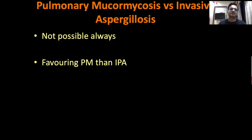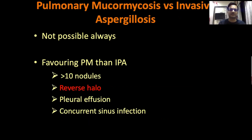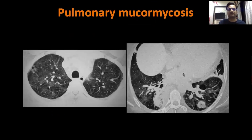Remember, mucormycosis is not the only invasive fungus — invasive aspergillosis also exists, and before COVID-19 it was actually more common. So how do you differentiate the two on CT? It is not always possible, but certain signs favor mucormycosis over aspergillosis: more than 10 nodules (aspergillosis usually presents with few but larger lesions), the reverse halo (shown to be more specific for mucormycosis), presence of pleural effusion, and concurrent sinus infection. If the patient already has invasive rhino-ocular or any form of mucormycosis, lung findings are also likely.